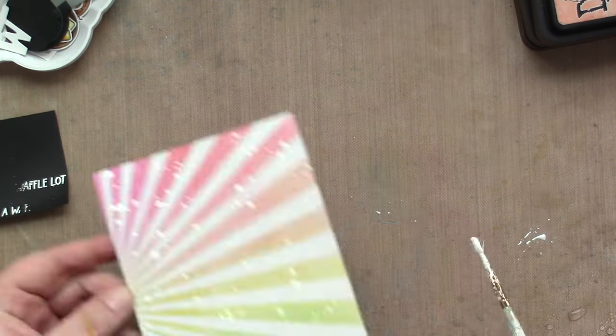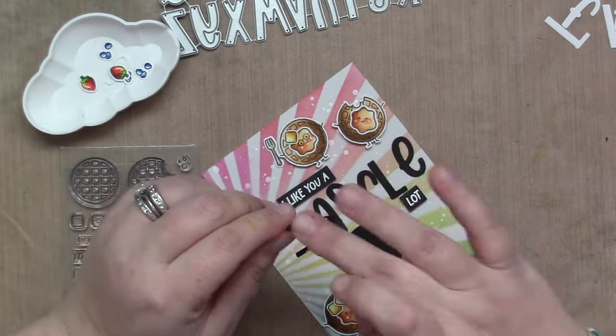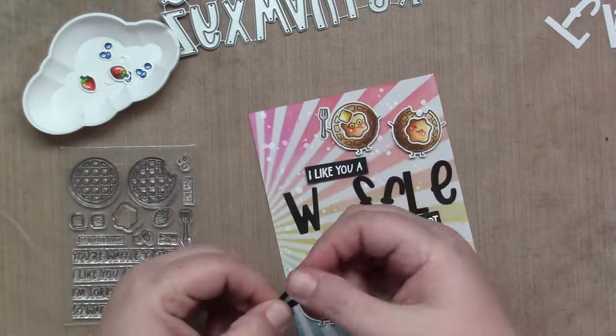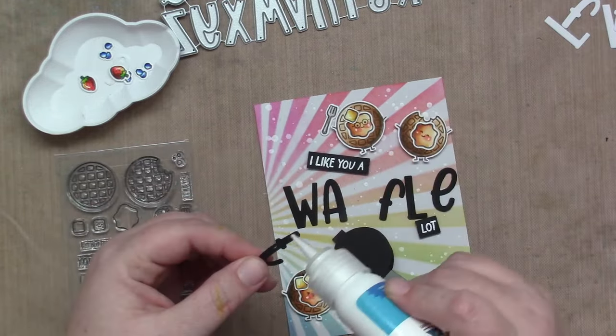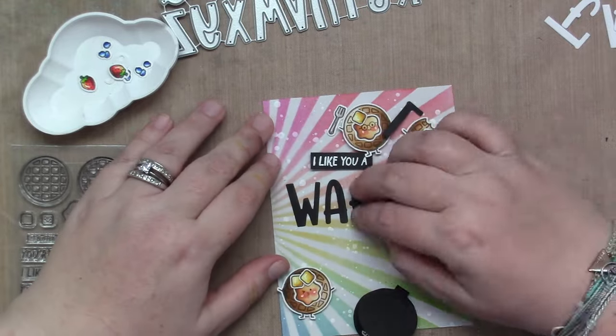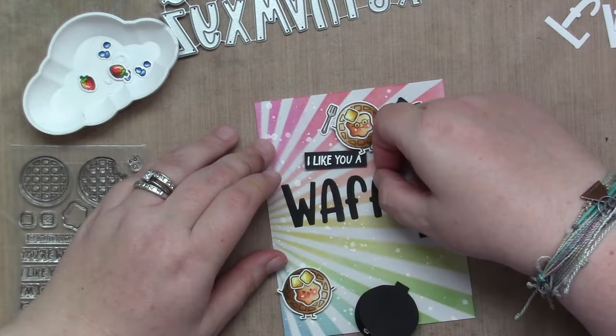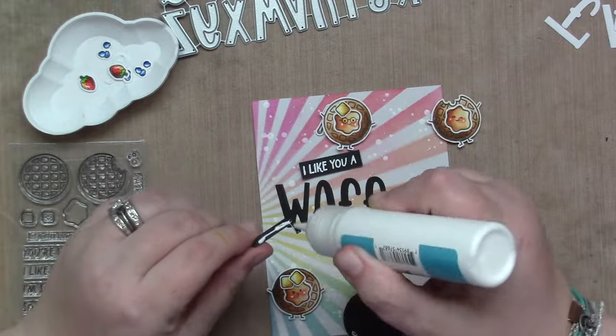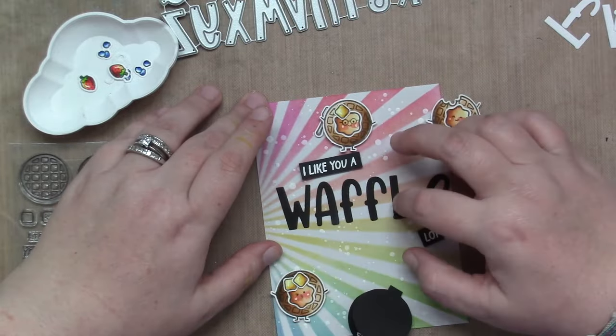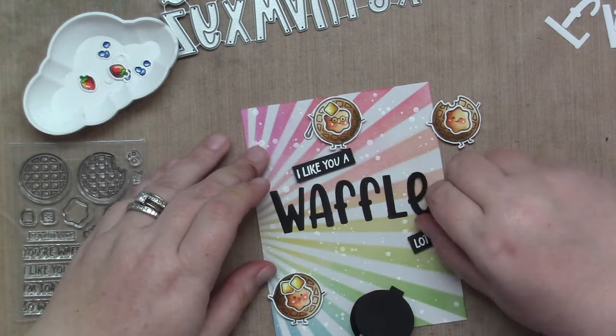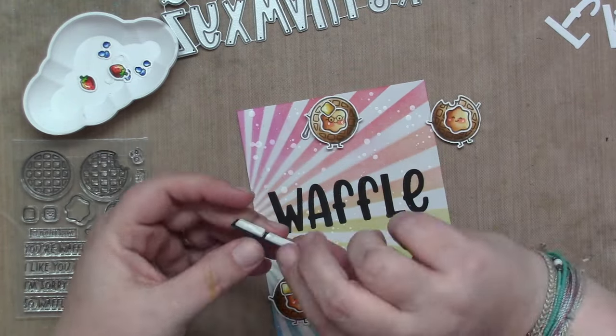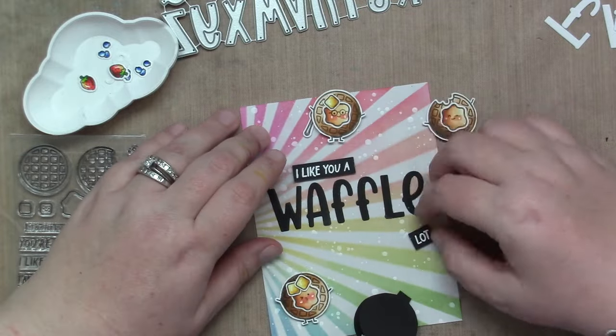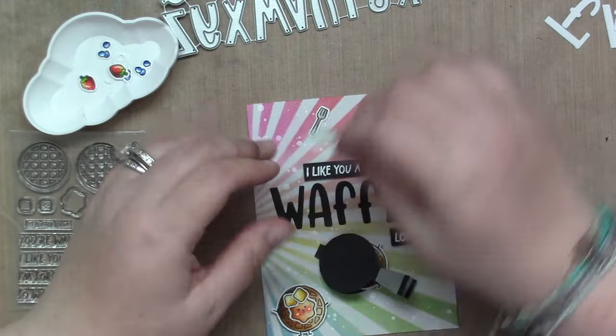I love how that looks. That's basically what the card's going to look like. Now I'm going to attach everything. The waffle letters were die cut with Henry's ABCs and I'm using the Lawn Fawn jumbo glue pen to attach it all to the background. Everything else except for the waffle iron is going to be popped up with foam tape.